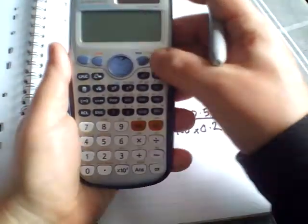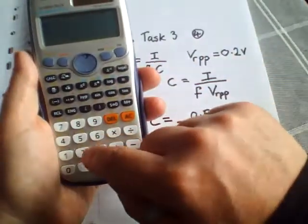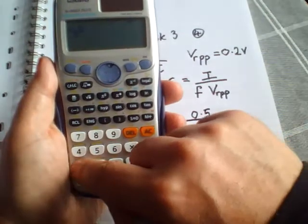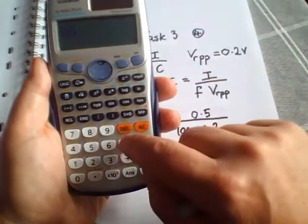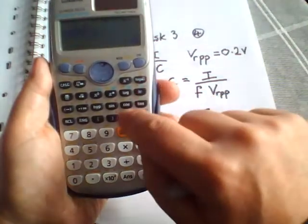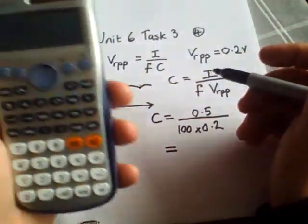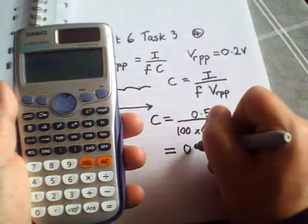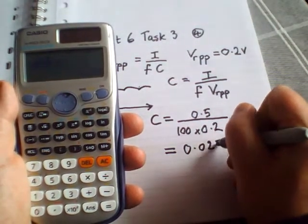0.5 divided by 100 times 0.2. Okay, now for a capacitor, that's a very large value—that's 0.025 farads.